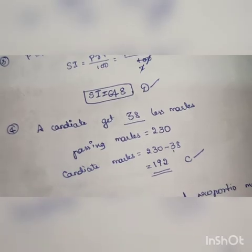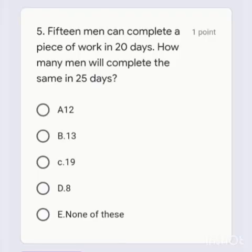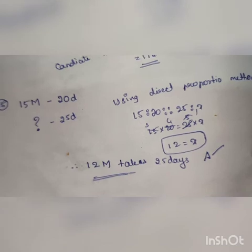Next, fourth question. In a test, a candidate got 38 marks less than the minimum passing marks. If the minimum passing marks are 230, then how much did the candidate get? The candidate marks equals 230 minus 38, which equals 192. Option C is the right answer.